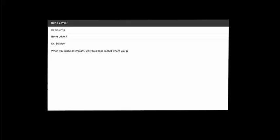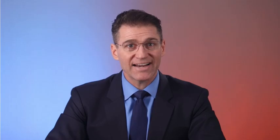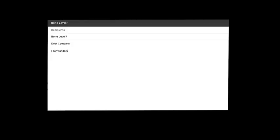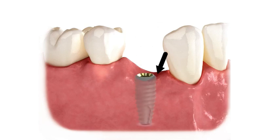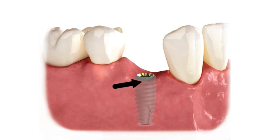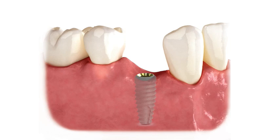I was recently asked: 'Dr. Stanley, when you place an implant, will you please record where you place it — subcrestal, supercrestal, or crestal?' I now have to respond and say, 'I don't understand your question.' To explore why, let's place an implant in this saddle point. If I place this implant so that the bone on the mesial and distal is at the level of the implant, you might be inclined to say this is at bone level. However, the bone on the facial is lower, meaning that part of the implant is supercrestal. But if we look at the lingual, the top of the implant is subcrestal — it's below the bone. So where is the implant placed: subcrestal, supercrestal, or crestal?